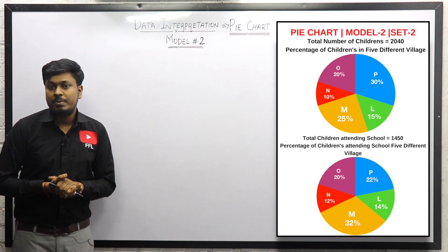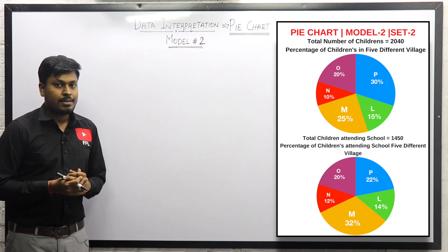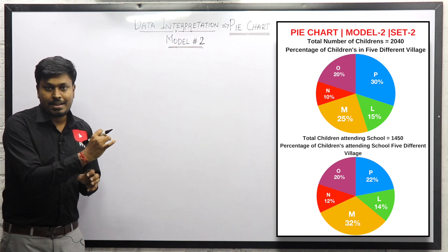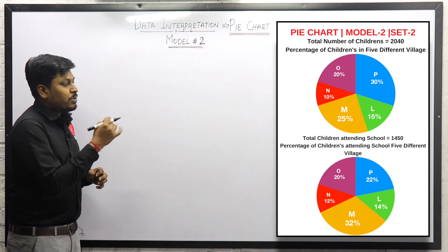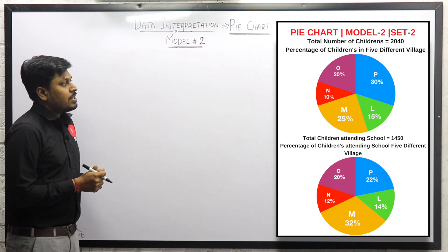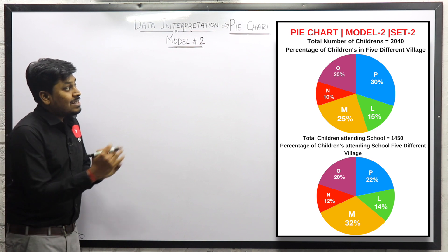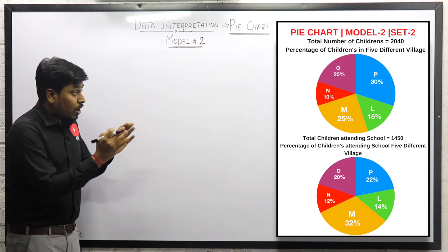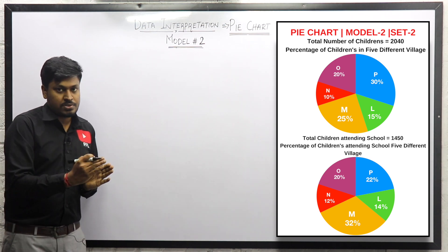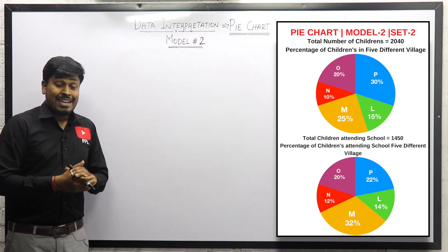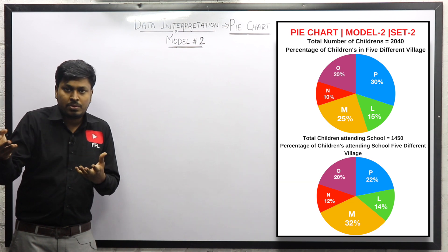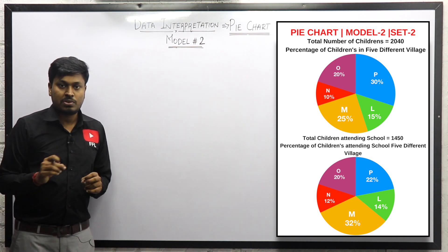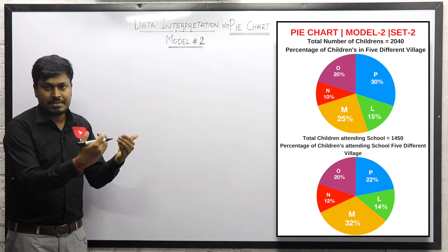Thanks for being here on my YouTube channel. In this video we are going to solve set number 2, a pie chart based on model number 2. They have given two different charts where all values are in percentages. The total number of children from five different villages is 2040, and the total number of children attending school is 1450. If they ask for students not attending, subtract attending from the total.